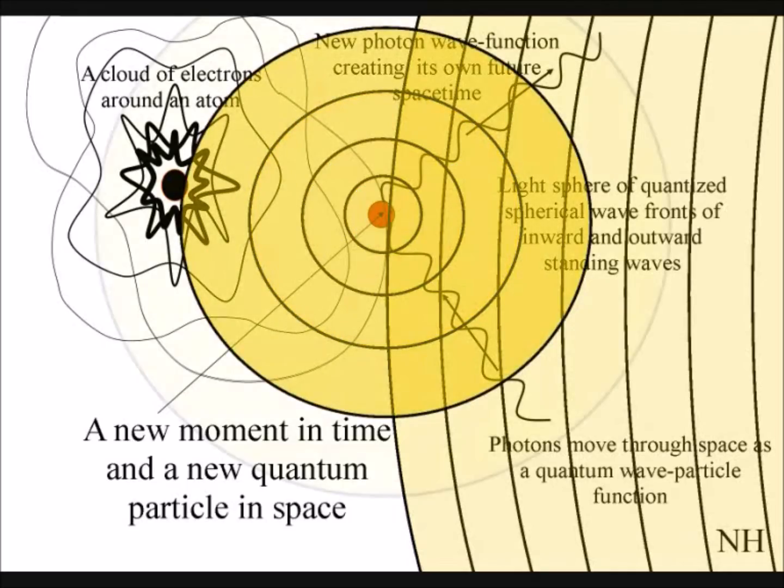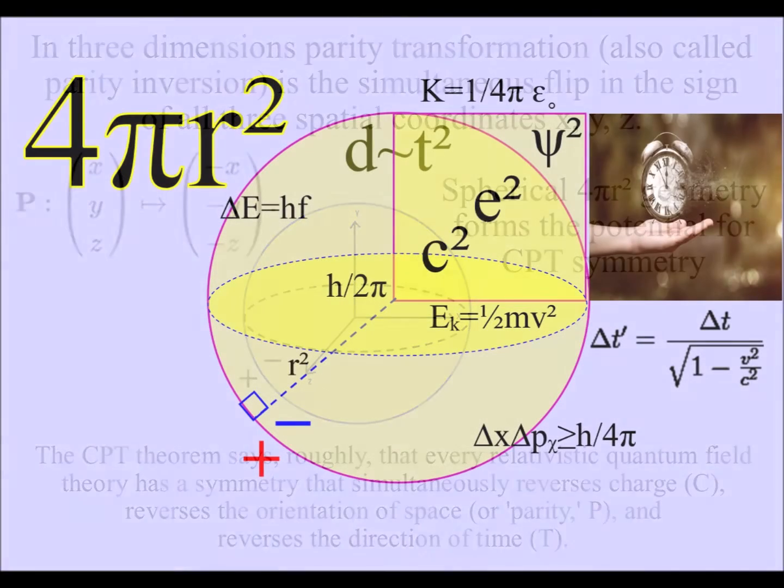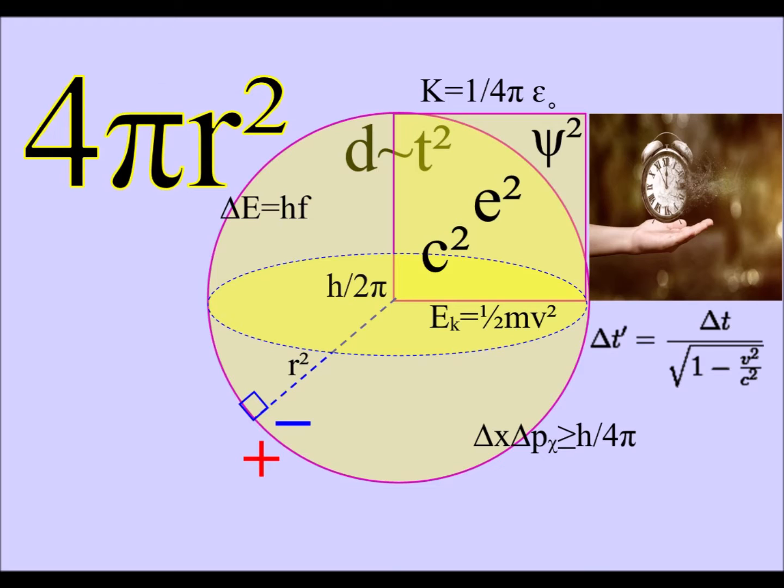The interior of the sphere naturally forms the characteristics of our three-dimensional space, with the spherical surface acting as a two-dimensional boundary condition or manifold for what we experience as the passage of time.